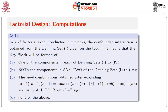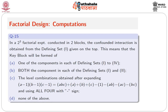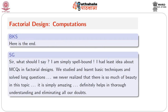Questions 14 and 15 continue in the same vein: 2³ factorial experiment conducted in two blocks, the confounded interaction obtained from defining set 1. The key block formation follows accordingly. All kinds of questions address confounding, fractional replication, blocking, ANOVA, errors, and which effects and interactions can or cannot be estimated — all in MCQ form.